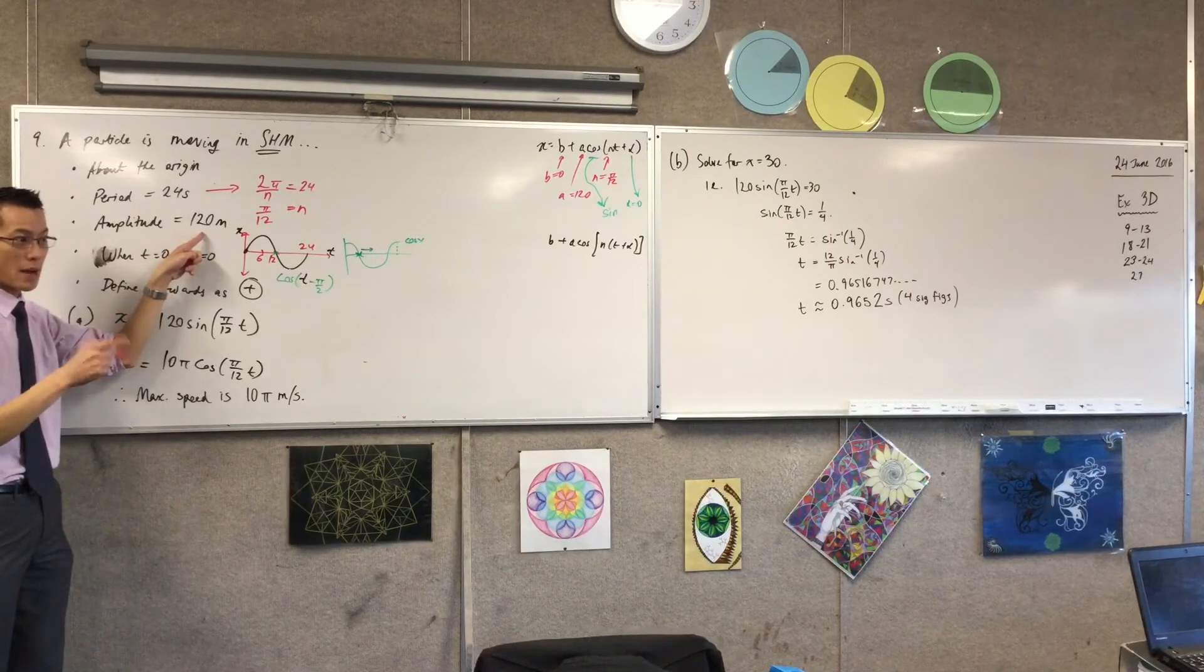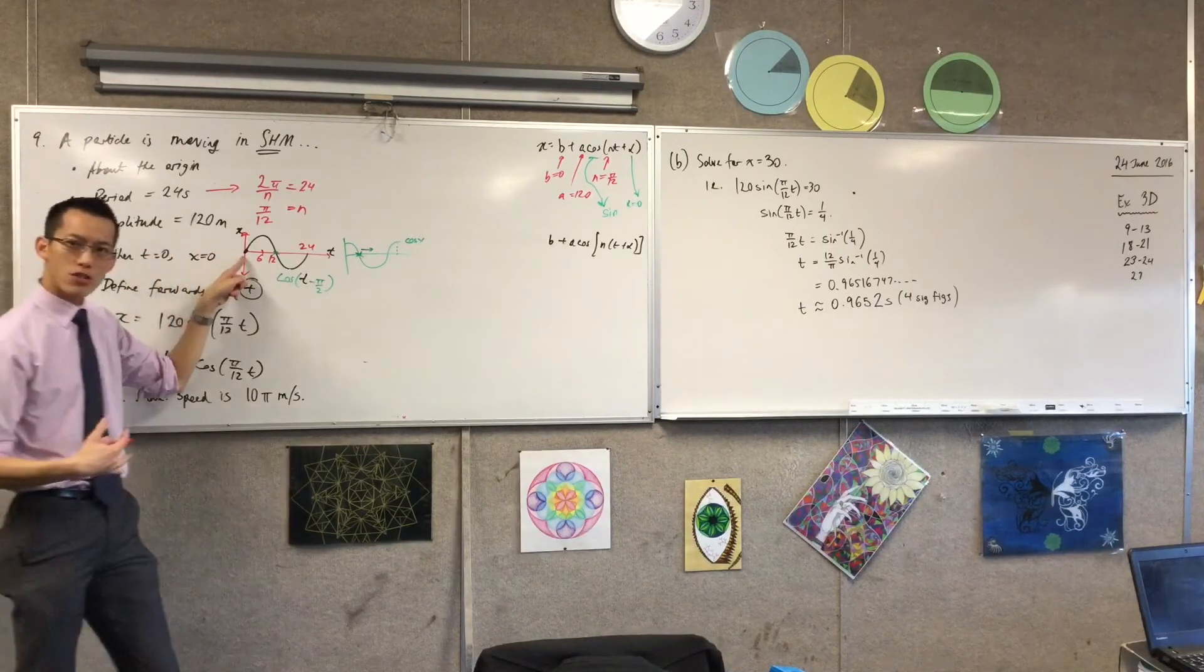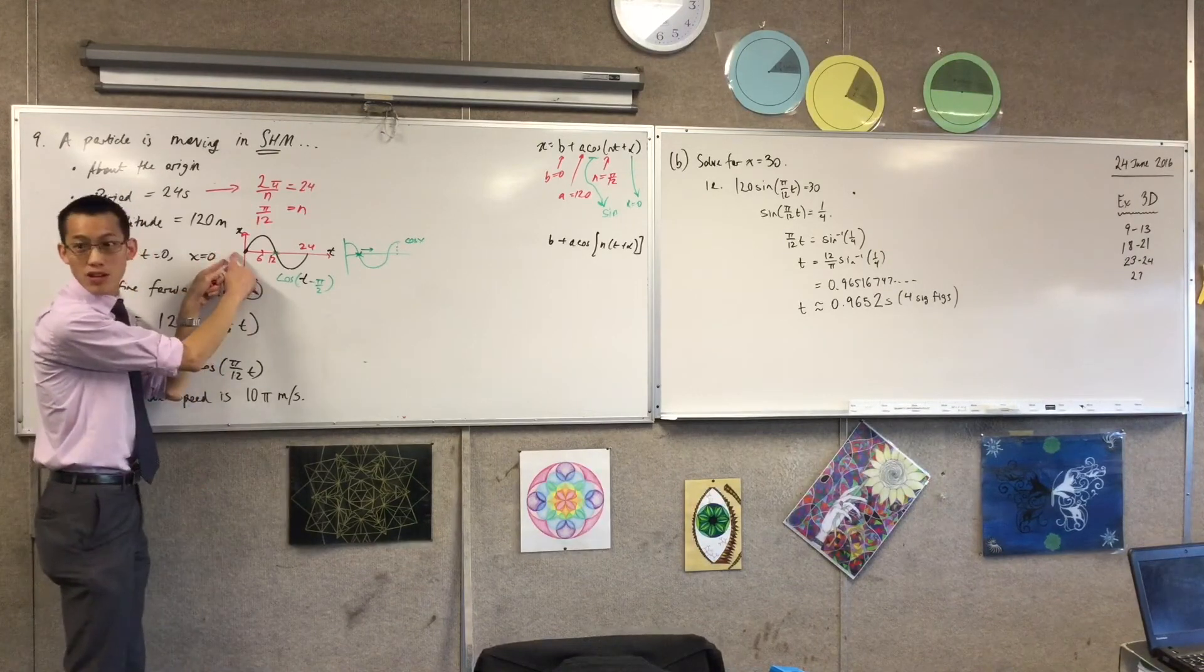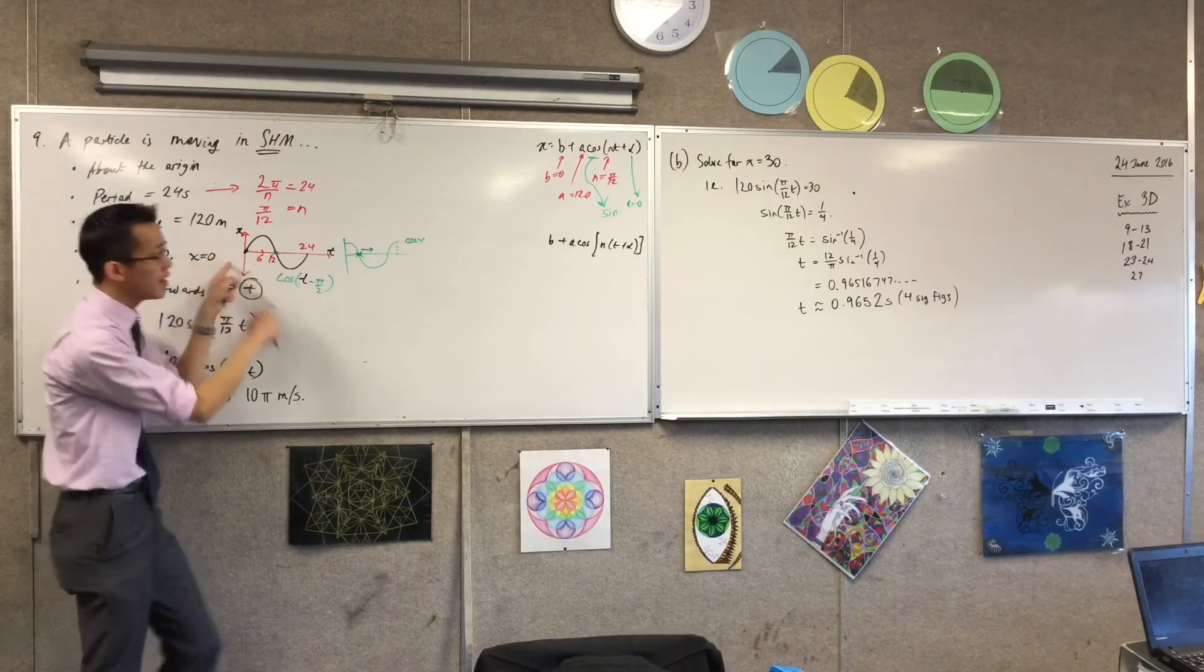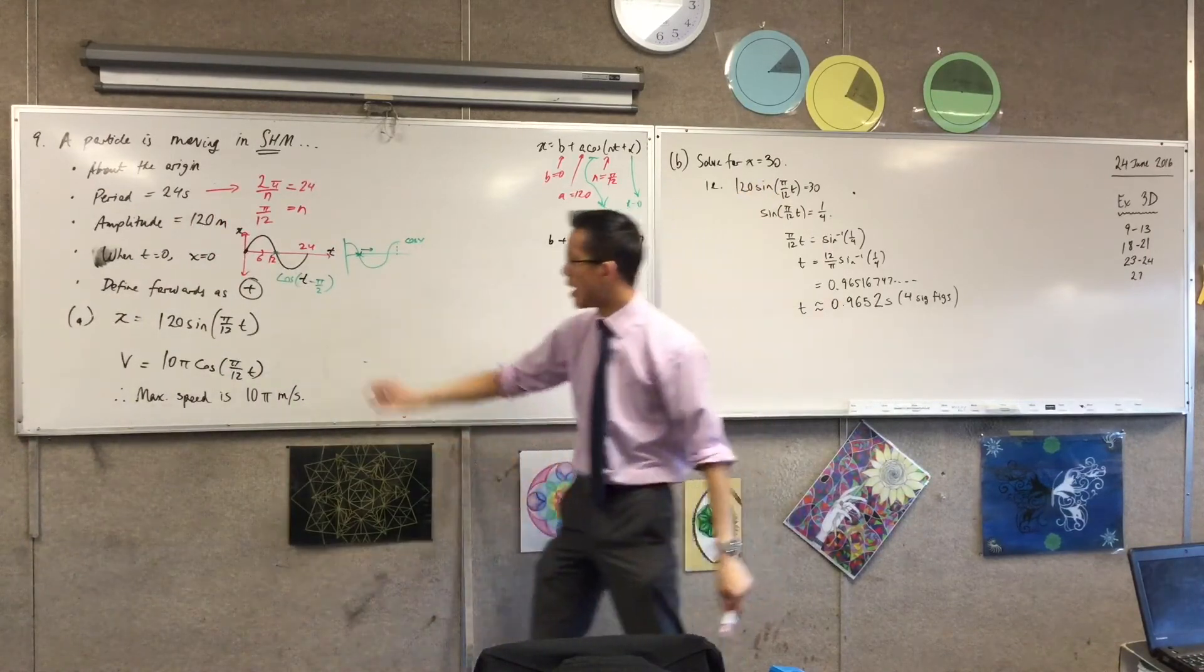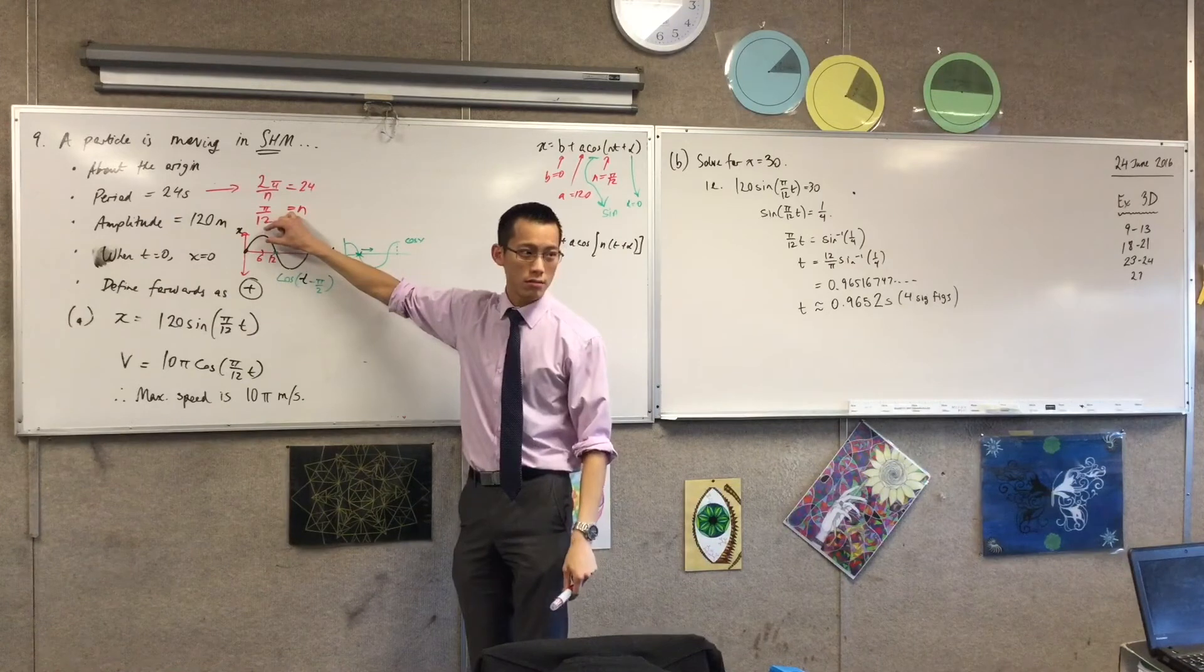So I can work out, well, my average speed is, but notice, when do I travel quickly? Next, sir. I travel quickly when I'm close to the origin, right? Which is at the beginning, right? So these first 30 meters, they flash by like that. The last 30 meters, they take much longer, right?